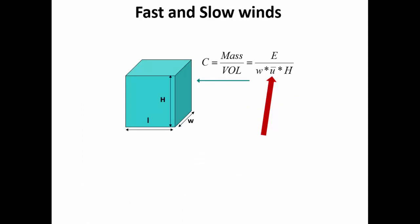Now let us look at another meteorological parameter: wind speed. If wind speeds are high, there is a possibility for pollution to move around and thin out, so your concentrations will be low. If the winds are stagnant with very low wind speeds, then pollution is not going anywhere, your concentrations will build up, and you will have very high concentrations.